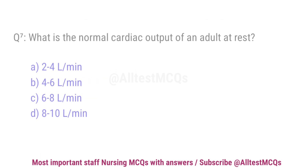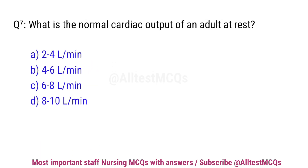Question number 7. What is the normal cardiac output of an adult at rest? The correct option is B: 4 to 6 litres per minute.